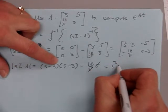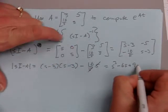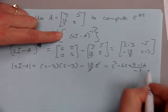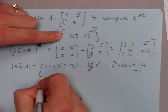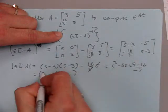We get s squared minus 6s plus 9 minus 16, so minus 7. So we get s squared minus 6s minus 7.